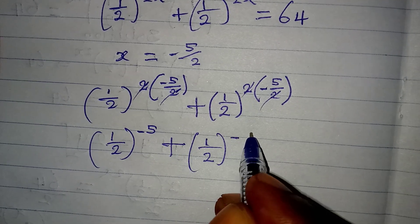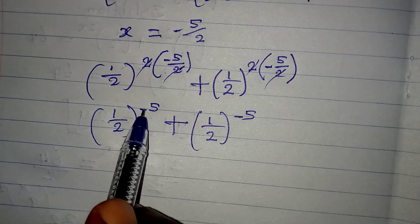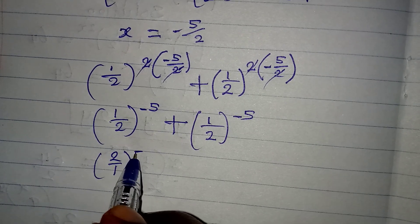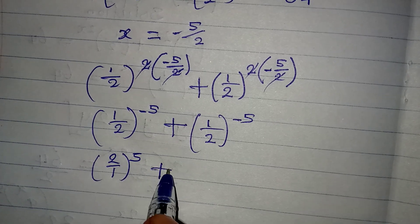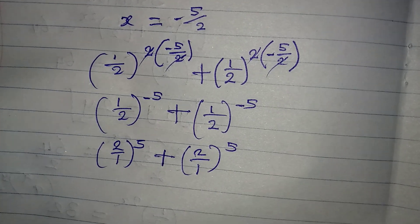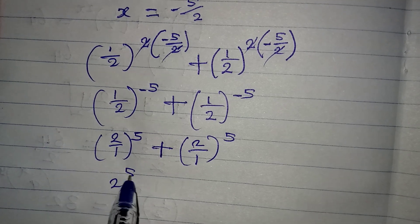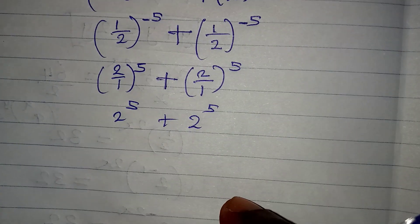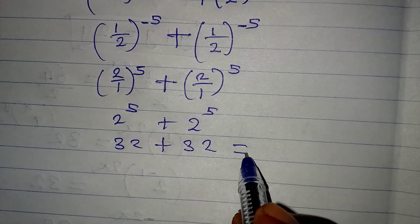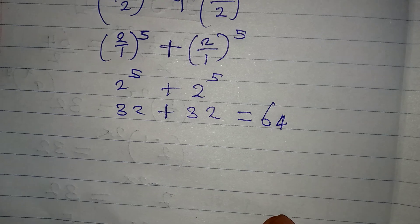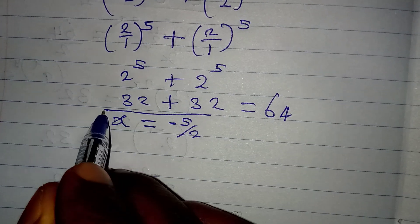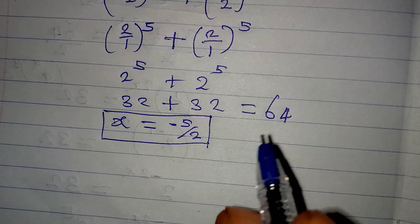To remove the negative exponent, we flip the fraction: 1 over 2 to the negative 5 becomes 2 to the power of 5. So we have 2 to the power of 5 plus 2 to the power of 5. Since 2 to the power of 5 is 32, we get 32 plus 32, which equals 64. We are correct — x equals minus 5 over 2. Thank you for watching; I believe you have learned something new. God bless.